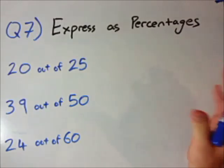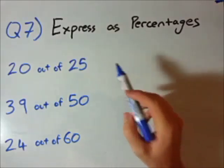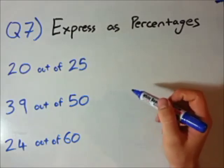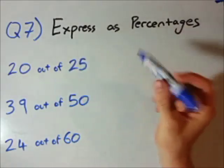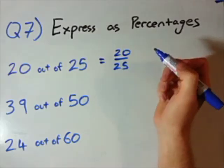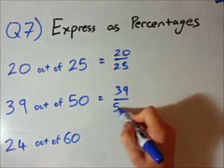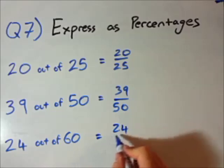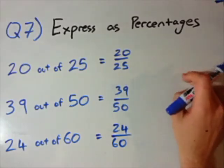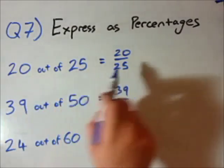Question 7 sort of brings together what we did in question 5 and question 6. Now, we're converting again to percentages. The only difference here is they've written it in words. It's actually probably one of the easier questions out of all of these three questions. What does it mean by 20 out of 25? Well, that just simply means 20 over 25. So, 39 out of 50 just simply means 39 over 50. 24 out of 60. Beautiful.